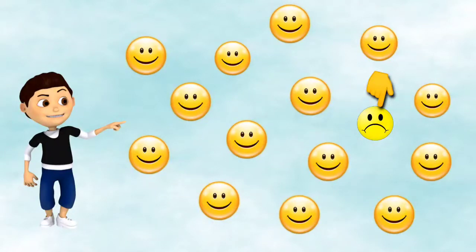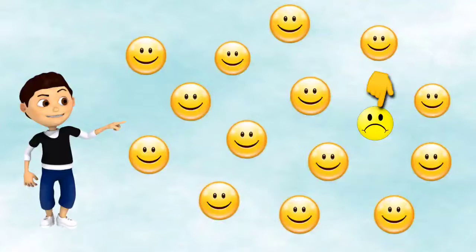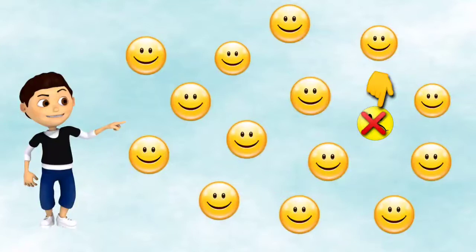All other objects are smiling faces, but we see only one sad face. So we are going to pick the object which is different and cross it off like this.